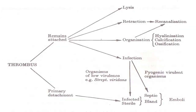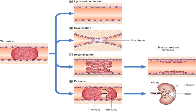Fate of thrombus is very important: it may remain attached, or it may undergo lysis; it may undergo retraction due to re-canalization; it may propagate; it may undergo organization due to hyalinization, calcification, or ossification; it may become infected or uninfected and detach as emboli, resulting in infected emboli or bland emboli. This photograph shows all these features.